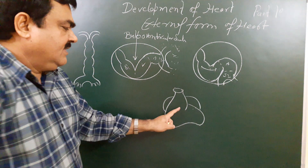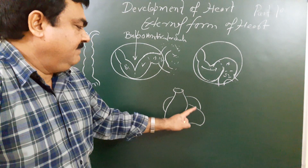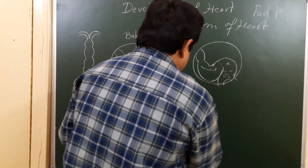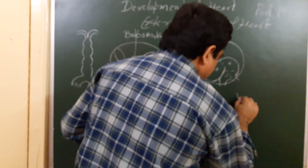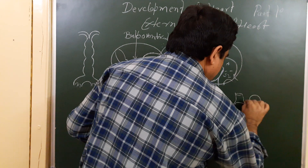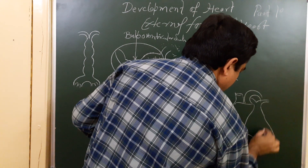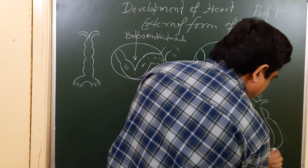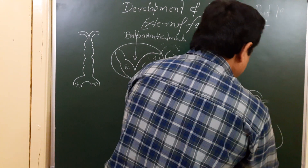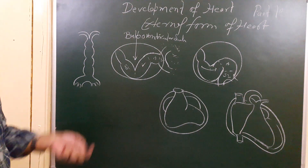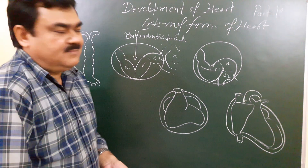It becomes like this — here is the right and left ventricle, here is the left atrium, and this is the right atrium. Gradually it is enclosed in the pericardium, taking a spiral shape. So this is the establishment of the external form of the heart. Thank you.